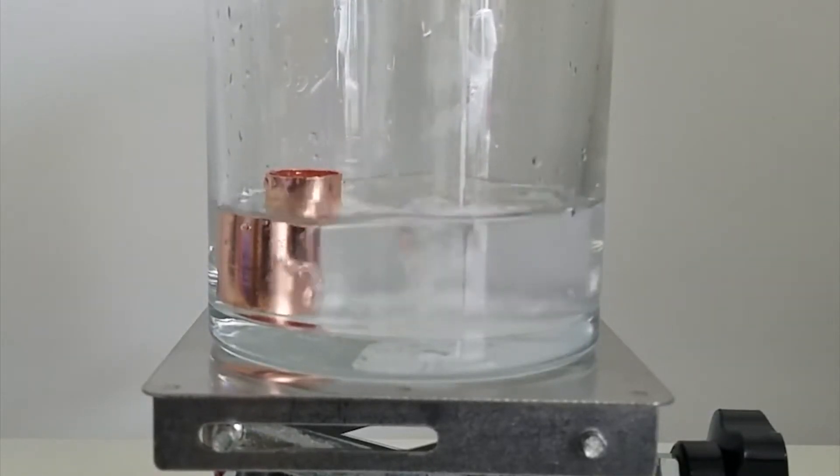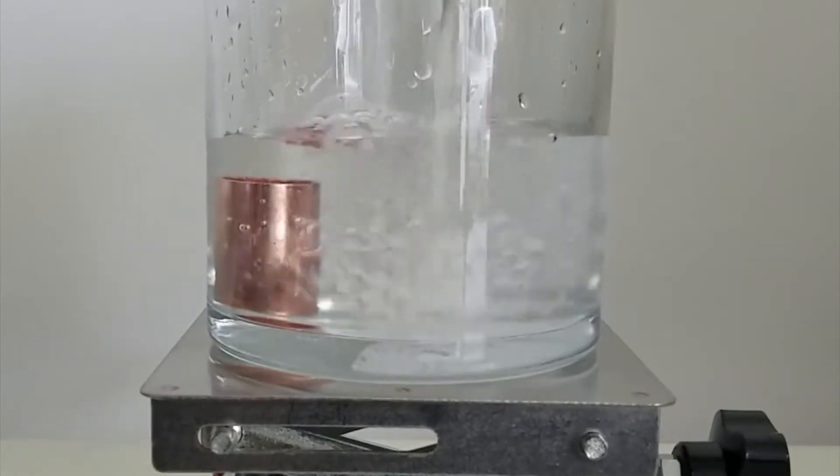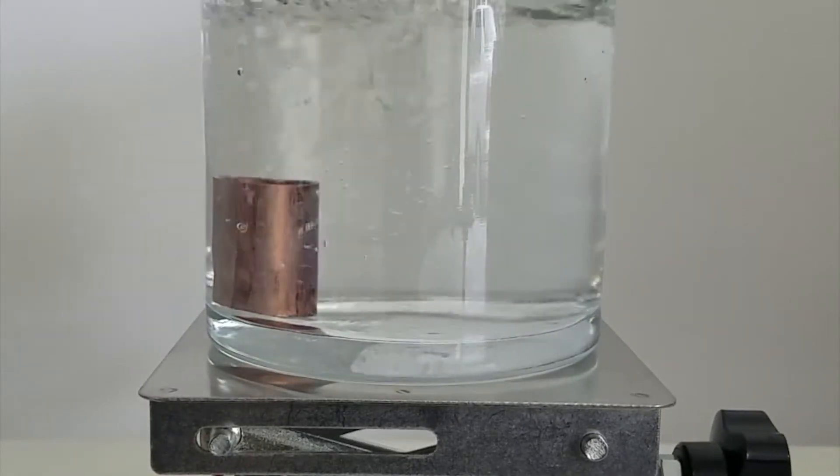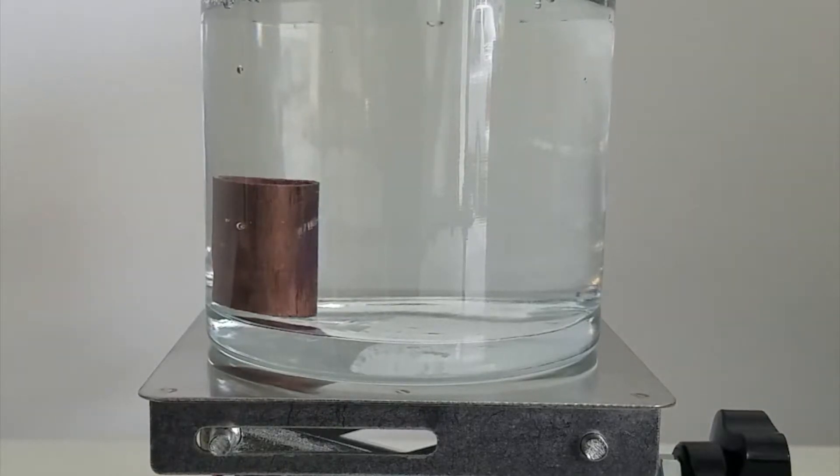As you can see, nothing really happens when I added the hydrogen peroxide until I added my acid solution. At this point, the copper pipe rapidly turns darker in color. This is because the acid breaks down the coating on the copper pipe, which allows the hydrogen peroxide to oxidize it into copper oxide.